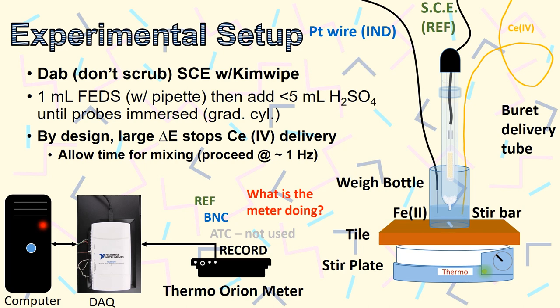On a practical note, the computer program you'll be working with stops the titration when large changes in potential occur. This is to allow the solution more time to mix. When the system does go into manual mode, wait about one second before adding more titrant.